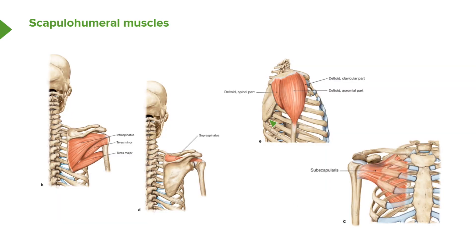Let's start with deltoid. The deltoid muscle comes from three different parts of the appendicular skeleton: the clavicular part, the acromial part, and the spinal part — giving us the anterior, middle, and posterior parts of deltoid. The anterior part comes from the clavicle, the lateral part from the acromion, and the posterior part from the spine of the scapula.